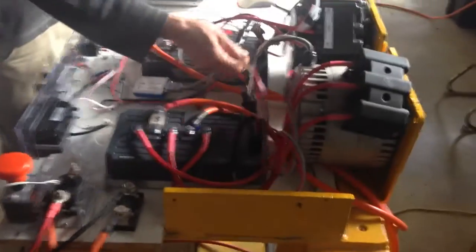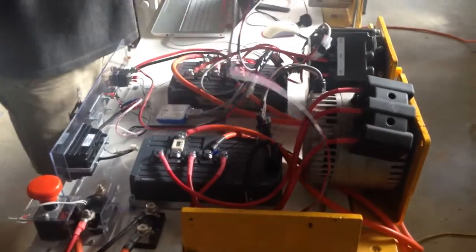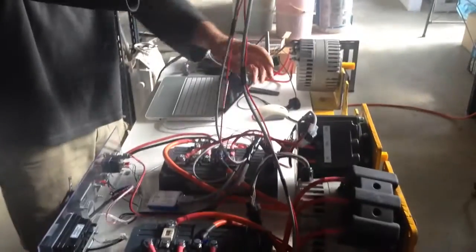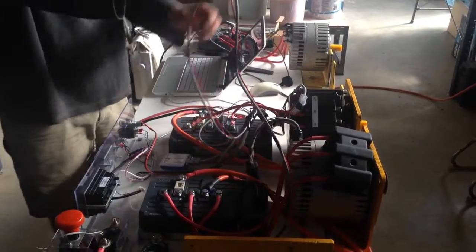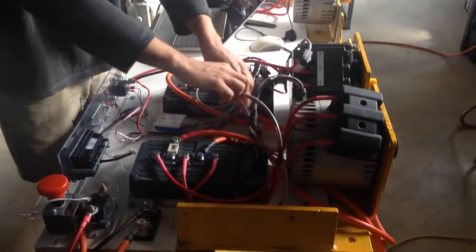And you'll see here we have a CAN bus connection between the two controllers. And this one's acting as the master, and this sends information to the slave to control the second motor.